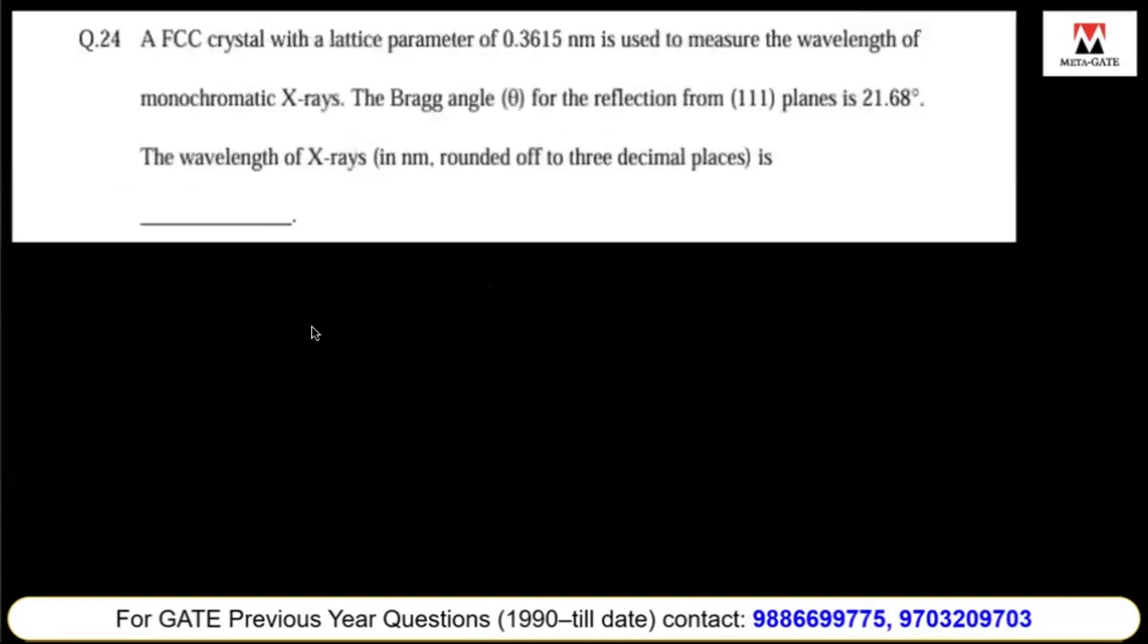An FCC crystal structure with a lattice parameter of 0.3615 nanometers is used to measure the wavelength of monochromatic X-rays. The Bragg angle theta for the reflection of (111) planes is 21.68 degrees. Find the wavelength of X-rays. According to Bragg's law, we know n lambda equals 2d sin theta, where theta is the Bragg angle and 2 theta is the diffraction angle.